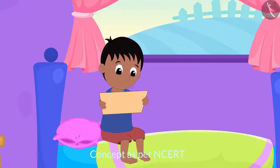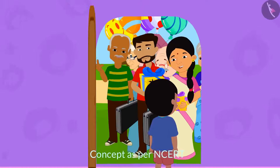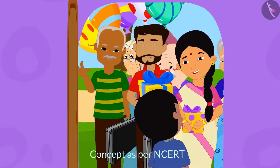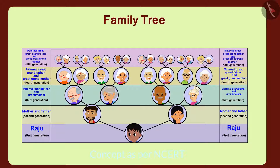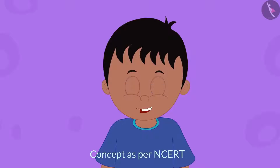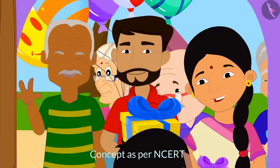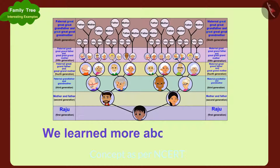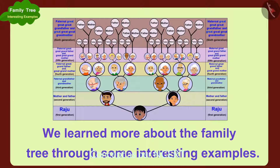Just then, Raju's doorbell rang. When Raju opened the door, he saw that the relatives he had only seen in the family tree were now standing in front of him, having come to celebrate his birthday. In this video, we learned more about the family tree through some interesting examples.